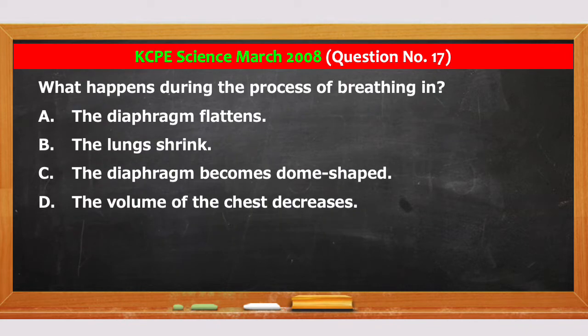What happens during the process of breathing in? A. The diaphragm flattens. B. The lungs shrink. C. The diaphragm becomes dome-shaped. And D. The volume of the chest decreases.